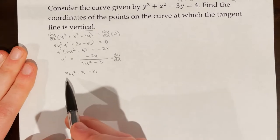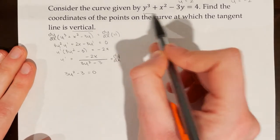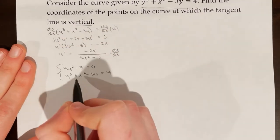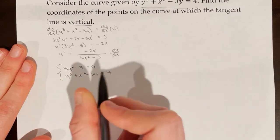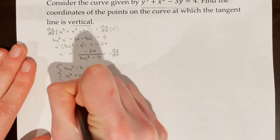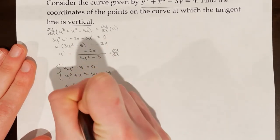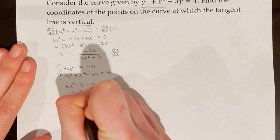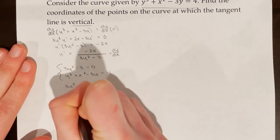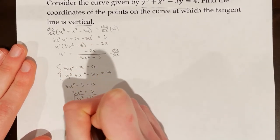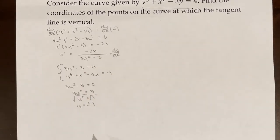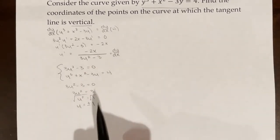That's one equation in the system; the other is the original equation. From 3y² - 3 = 0, we get 3y² = 3, so y² = 1. Taking the square root of both sides gives y = ±1. I've already found part of the answer without full substitution.